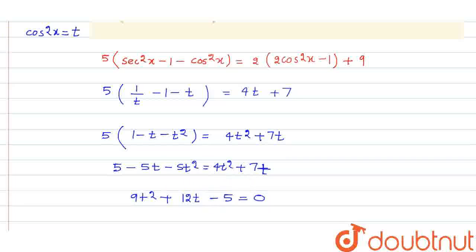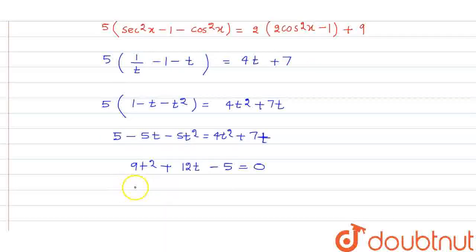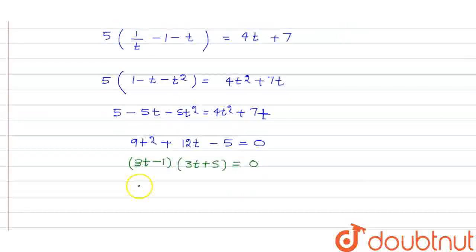Now factor this. So factors will be 3t minus 1 into 3t plus 5 is equal to 0. So this will be t is equal to 1 by 3, t is equal to minus 5 by 3.